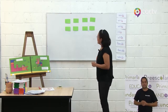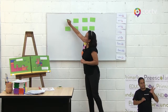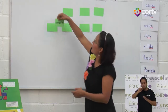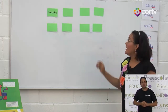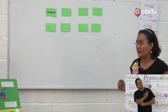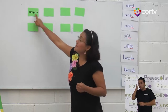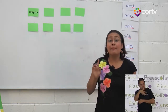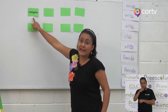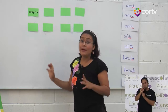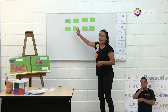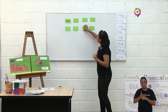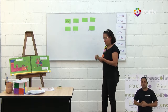Vamos a continuar. Vamos a desprender la primera tarjeta y dice: caniquita. ¿Dónde estará la palabra canicota? Acuérdate, este es diminutivo. Entonces vamos a encontrar la palabra aumentativa de canica. Aquí está el diminutivo, caniquita. Vamos a buscar la palabra canicota. ¿Dónde estará? Ayúdame a elegir una desde casa. Muy bien. Y tenemos la palabra canicota.